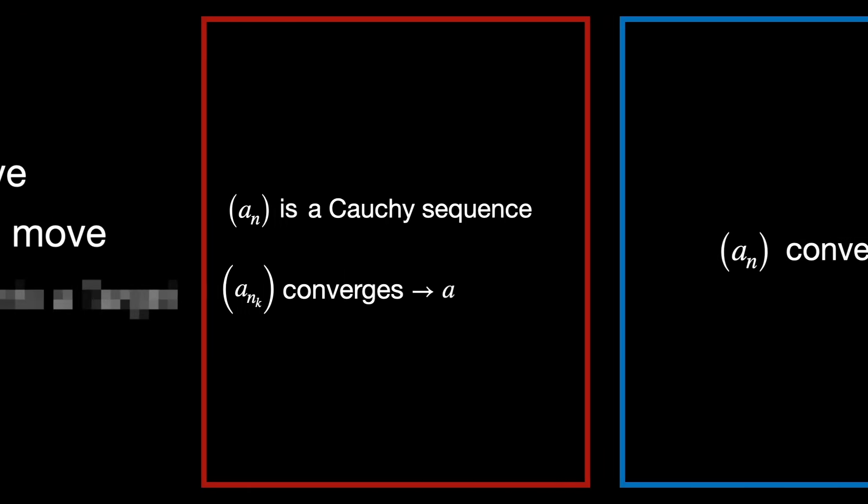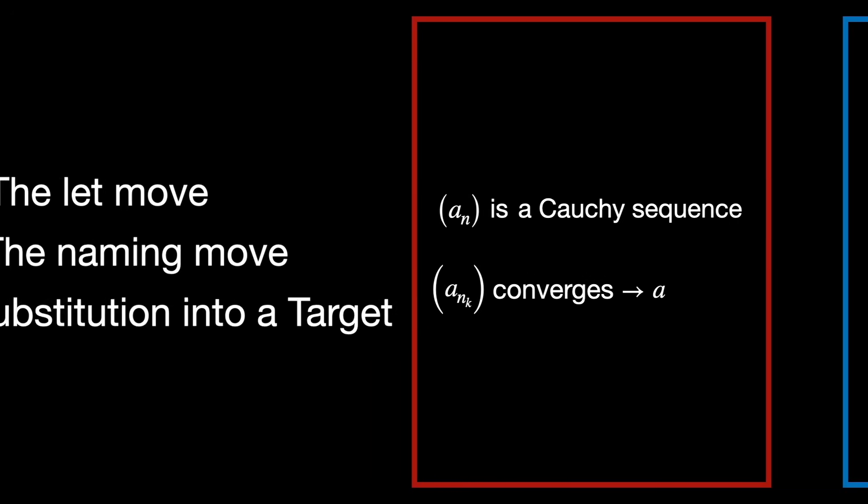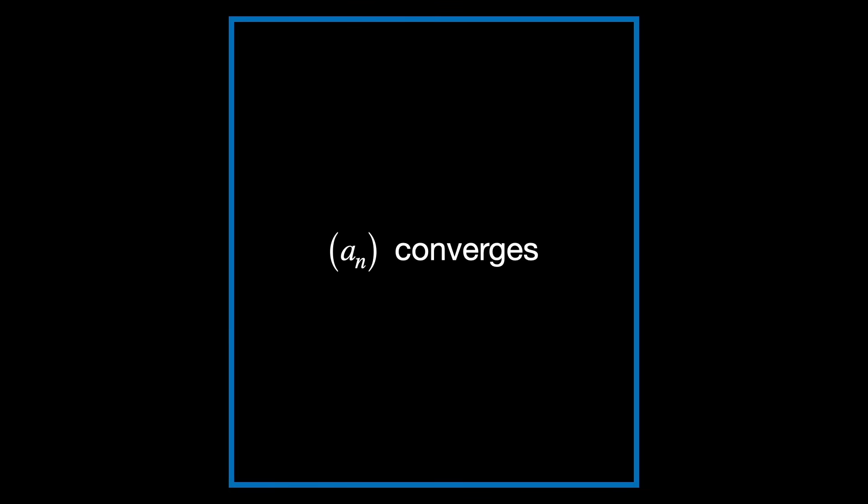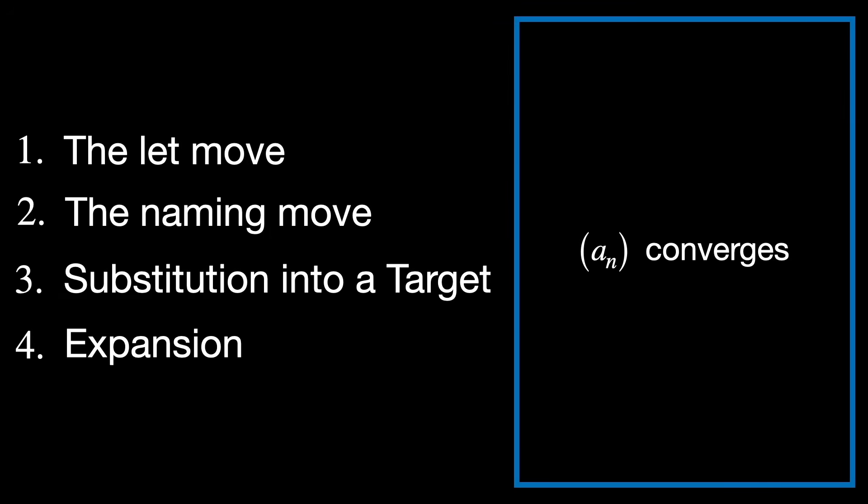This move is known as substitution into a target. Now that we've had enough of a look at our assumptions, let's try to take a closer look at what it is that we're actually trying to prove. In order to do that, we're going to use a process called an expansion.